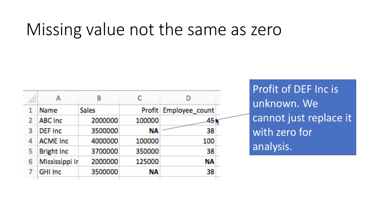Here's an example of a data frame where profit is being displayed as NA in some rows, and employee count is also displayed as NA. That means these are values we don't know. For the company DEF Inc, we don't know the profit — it's unknown. We cannot just replace it with 0 for analysis because that will be extremely misleading. For example, if you're calculating the average and you put a 0 there, that's going to pull down the average — it's not going to be right. So NA is not the same as 0.